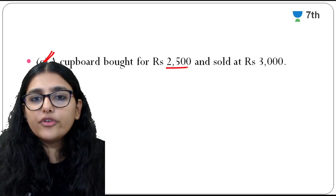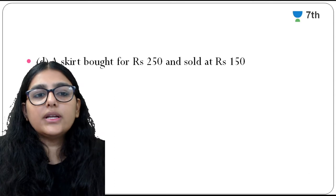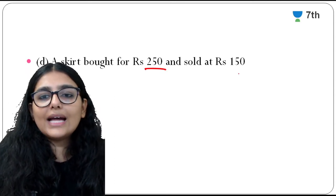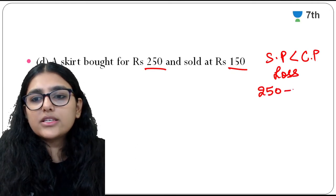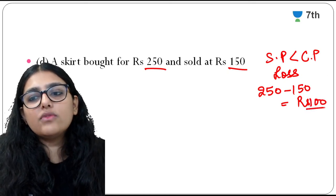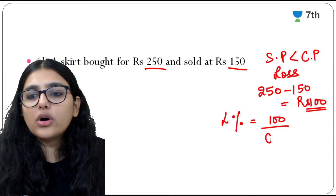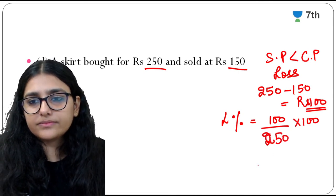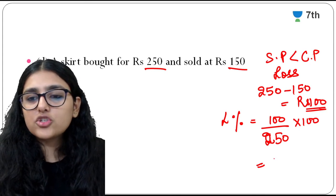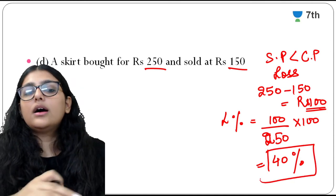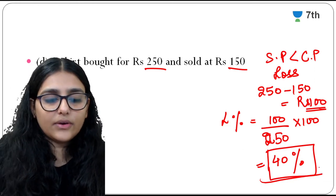A cupboard bought for Rs. 2500 and sold at Rs. 3000 is your homework — find profit amount and apply the profit percentage formula. For the skirt bought for Rs. 250 and sold for Rs. 150, selling price < cost price, so there is loss. Loss = 250 − 150 = Rs. 100. Loss percent = (100/250) × 100 = 10000/250 = 40%. So there is a 40% loss.